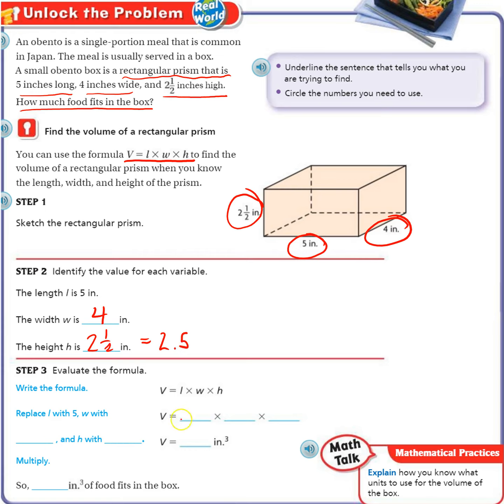Alright, so now we plug in those numbers for our formula, length times width times height. So 5 times 4 times 2.5. Replace l with 5, w with 4, and h with 2.5 if you like the decimal or the fraction form. Alright, let's go ahead and do this.